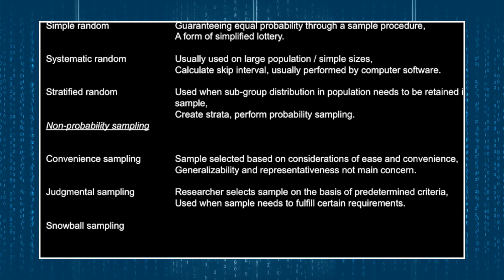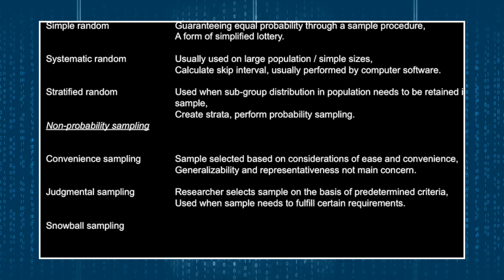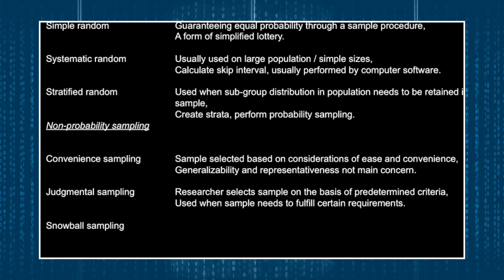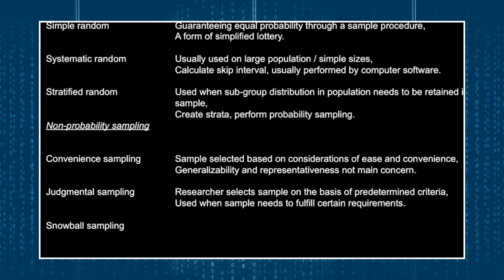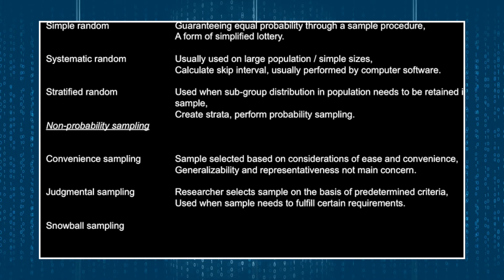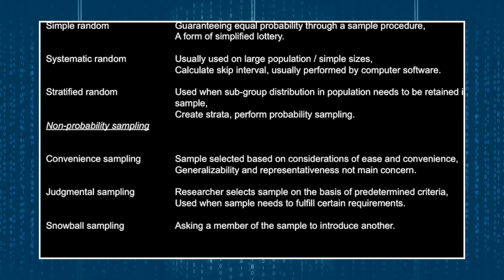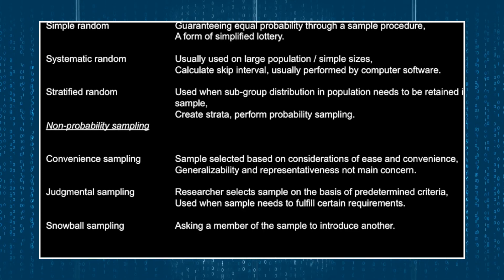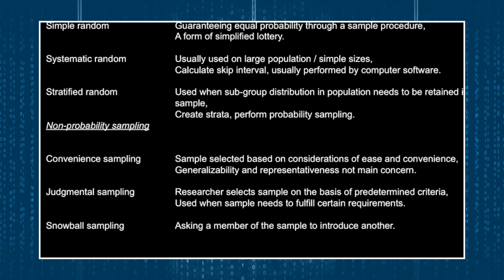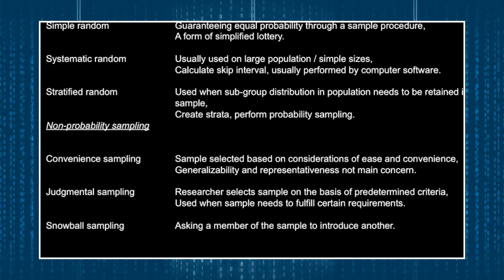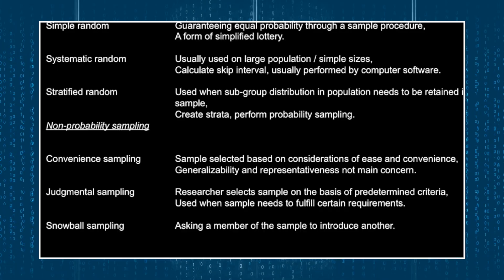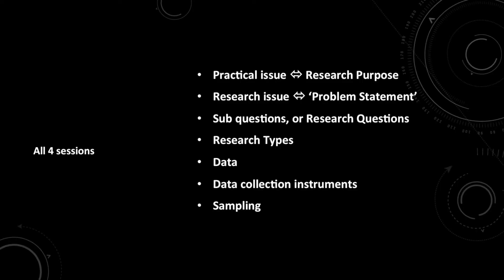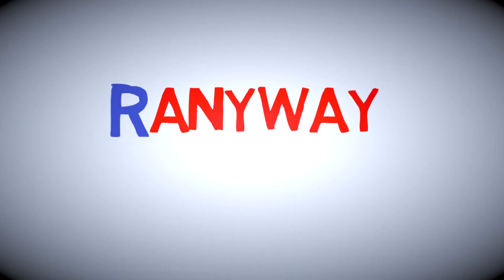The third one is called snowball sampling, or snowballing. Essentially, this means if I can locate one person who would qualify to be included as part of the sample, I will ask him or her to introduce me to more people like him or her who might also be able to fulfill the criteria I have set forth for selecting the sample. At this point, we have covered everything mentioned in the module book. You can now finalize your research design paper for your module assignment.